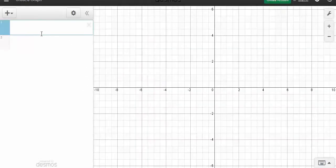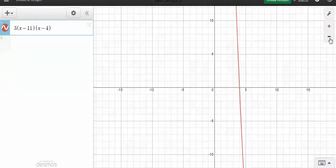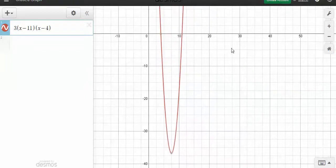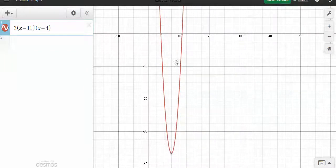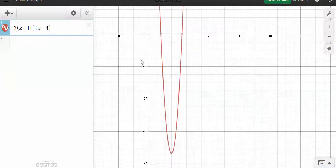Let me just pull that graph up there. 3, x minus 11, x minus 4. I'm going to zoom out just a little bit. So you see it crosses at 4, it crosses at 11, and it's stretched. If I didn't have the 3 there, you would see how it's not stretched vertically. But then I stretch it.